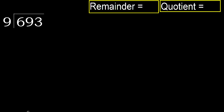693 divided by 9. 6 is less, therefore next. 69 is not less, therefore we work with 69. 9 multiplied by which number is nearest to 69 but not greater?